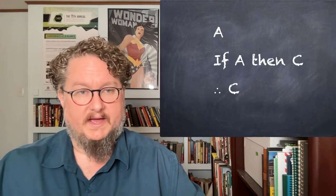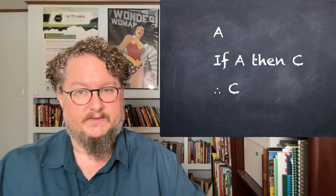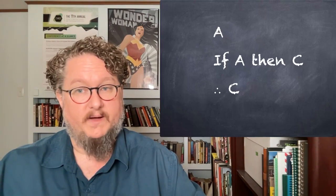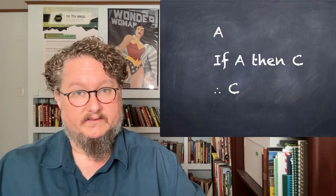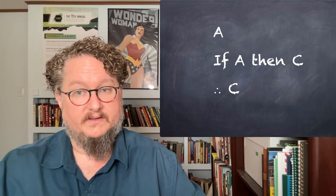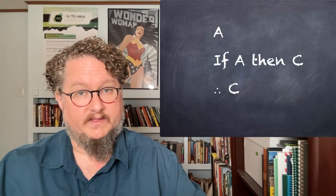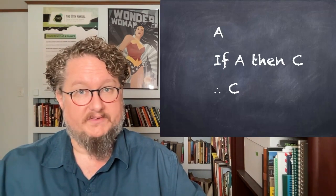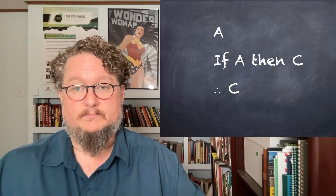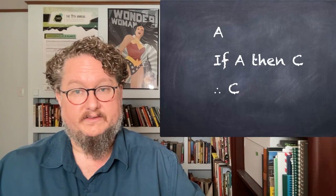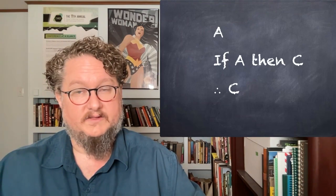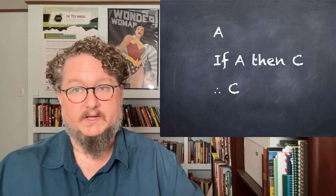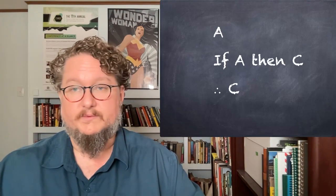This allows us to think about a distinction that's important to SL: the distinction between atomic sentences — sentences like A and C, where the structure has been completely abstracted away — and complex sentences that have atomic sentences as their parts, as well as logical connectives that connect them together. We call it sentential logic because the basic units themselves are sentences or propositions.